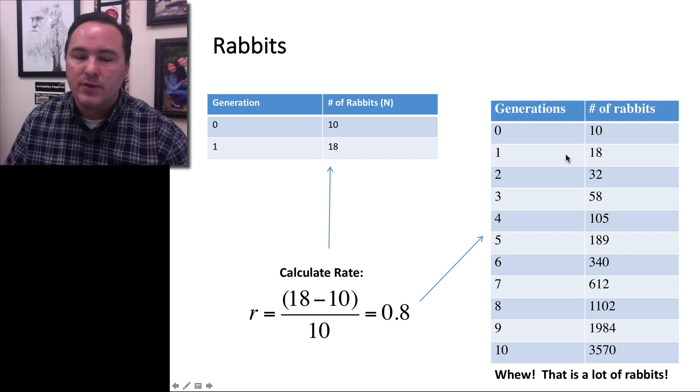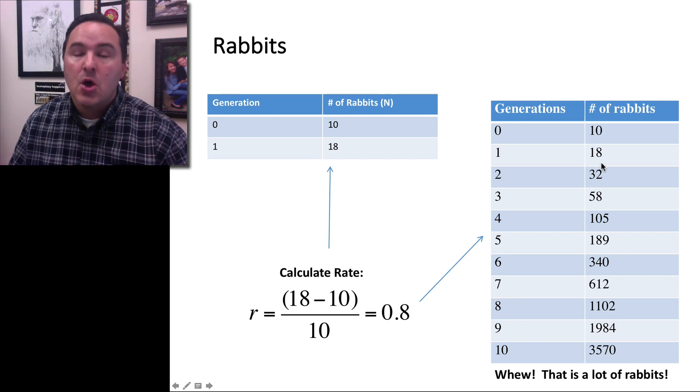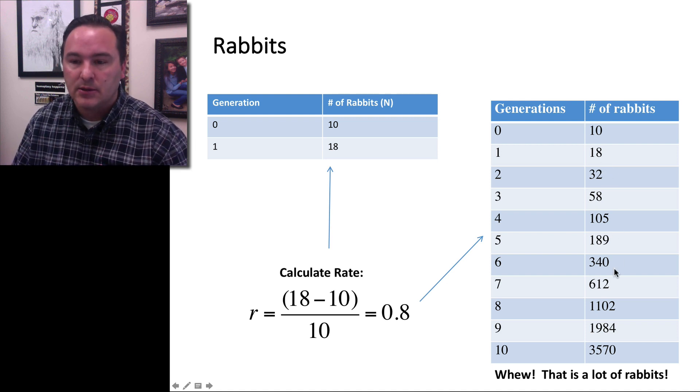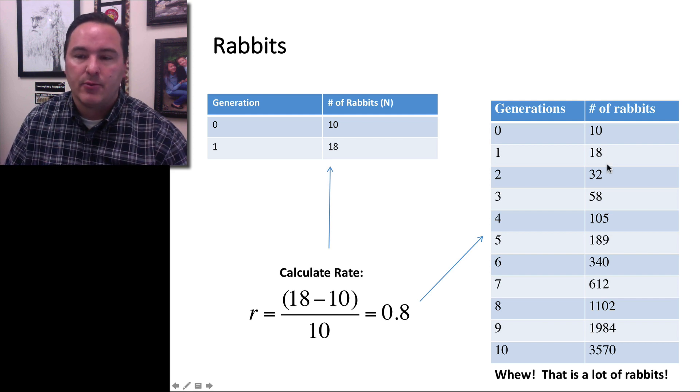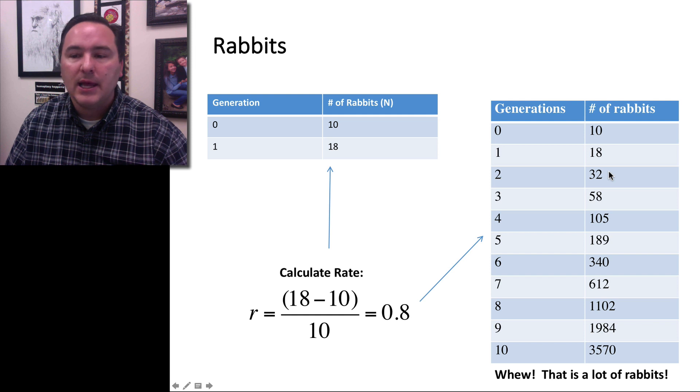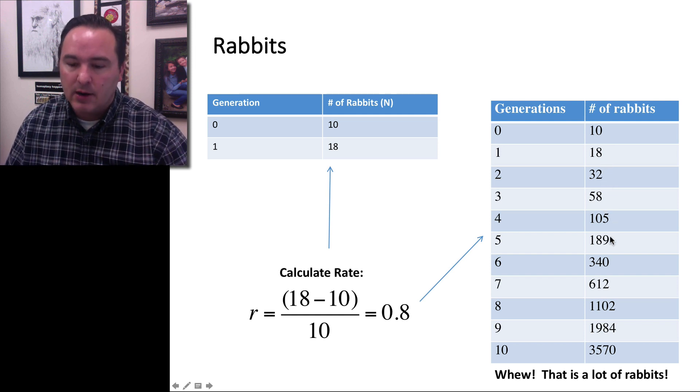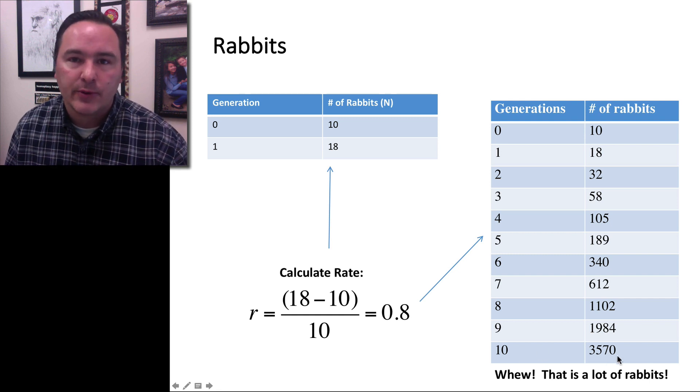If you then use that rate, you can calculate or estimate what the population will be like in each succeeding generation. You simply take the current population and times it by the rate and add that to the current population. You end up increasing and getting larger and larger. By generation 10, you already have 3,500 rabbits.